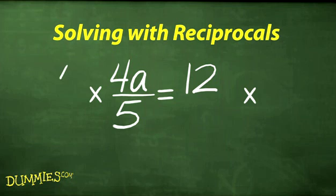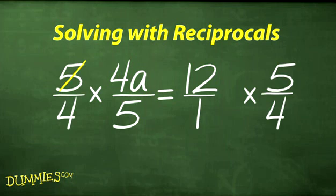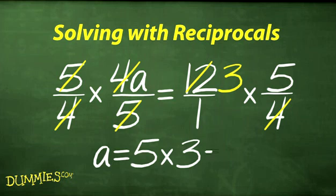First, multiply each side by the reciprocal, 5 fourths. Then, just like before, reduce and simplify. And you get a equals 15.